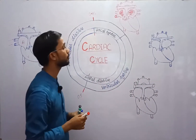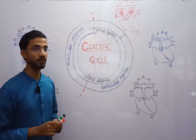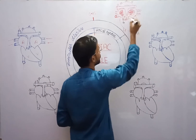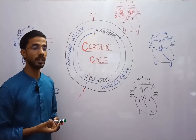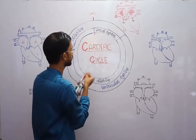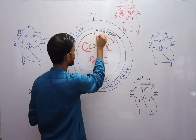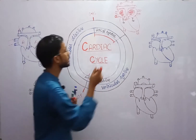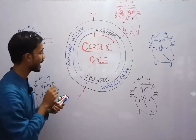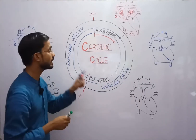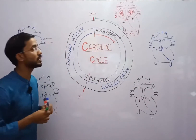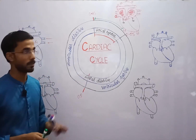Now both atria fill up, and then both atria contract, pushing blood into the ventricles. This contraction of the atria is called atrial systole, shown by this portion of the cycle. Atrial systole takes 0.1 second. During this time, the ventricles remain in a relaxed state, as shown by this area — only the atria contract.